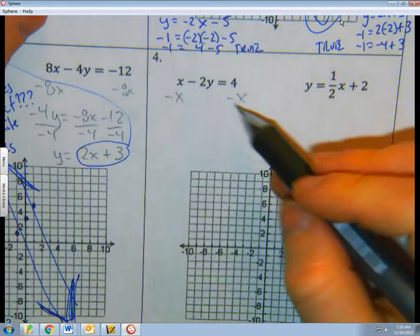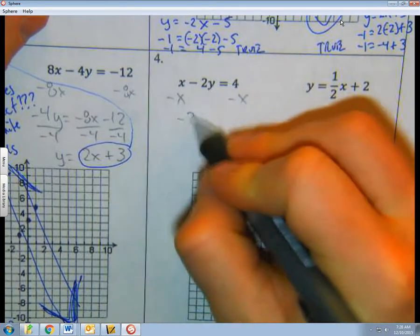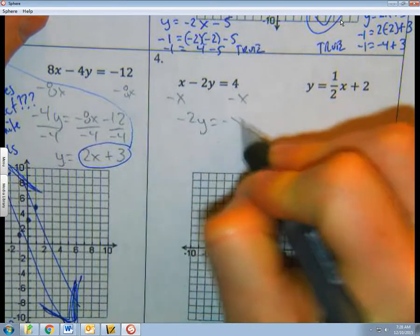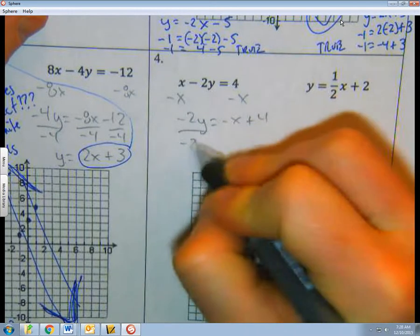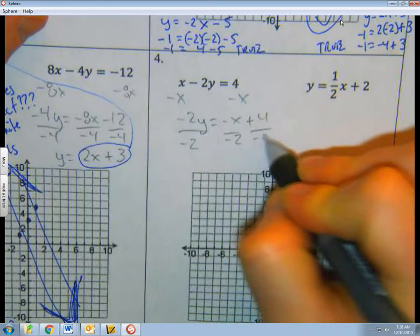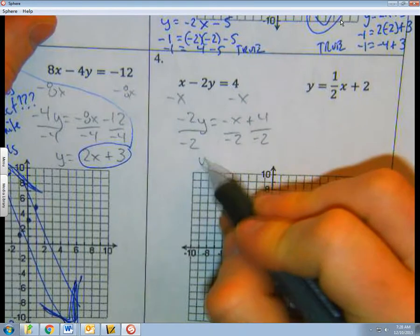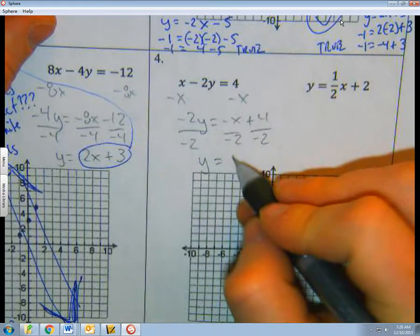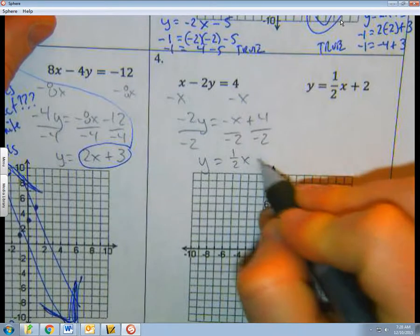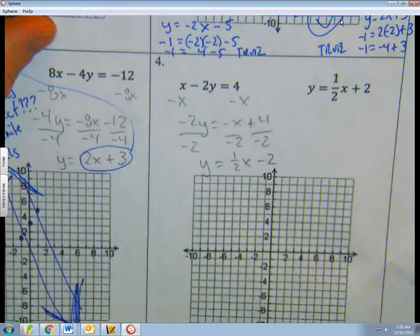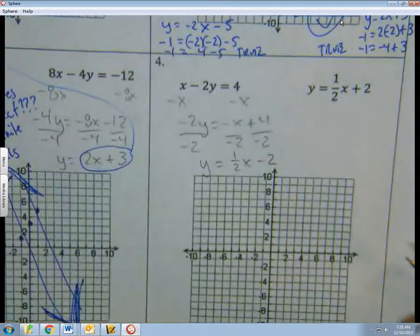So, I subtract x. We got minus 2y is negative x plus 4. I'm going to divide by minus 2. Those are going to cancel out, and I'll get 1 half x minus 2. Oh, okay.